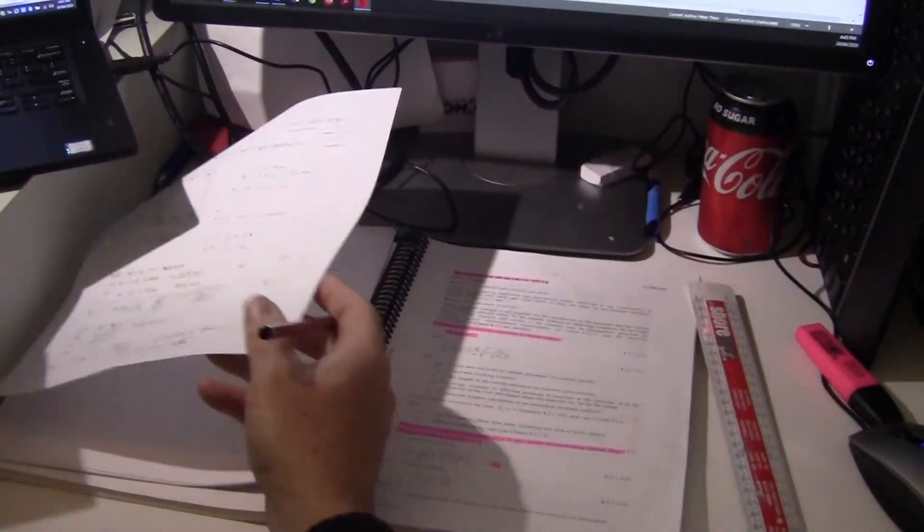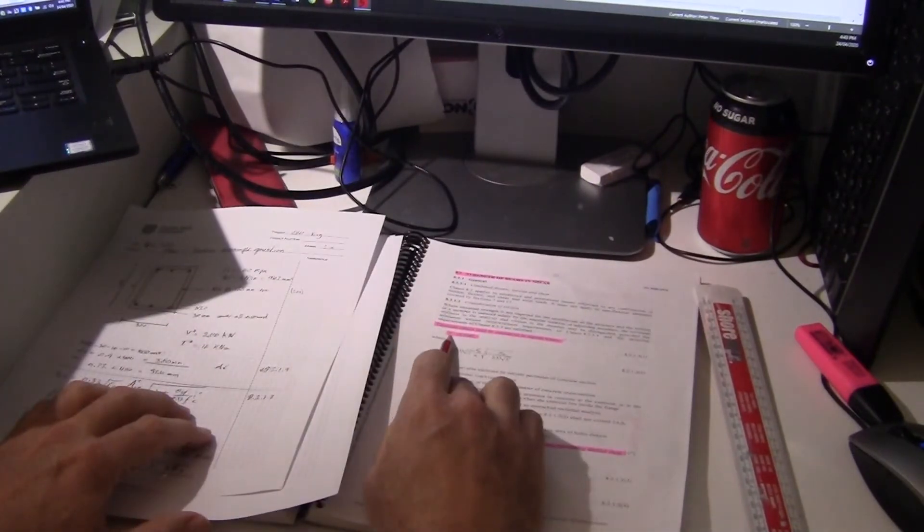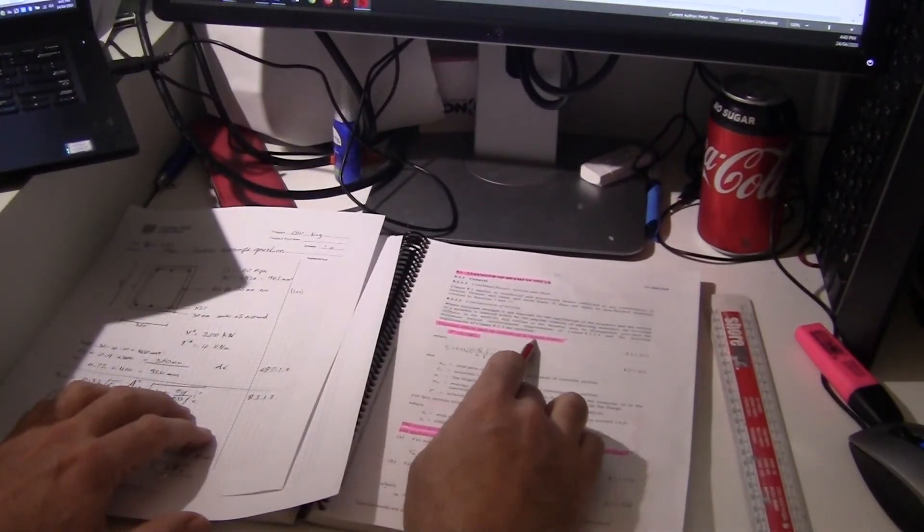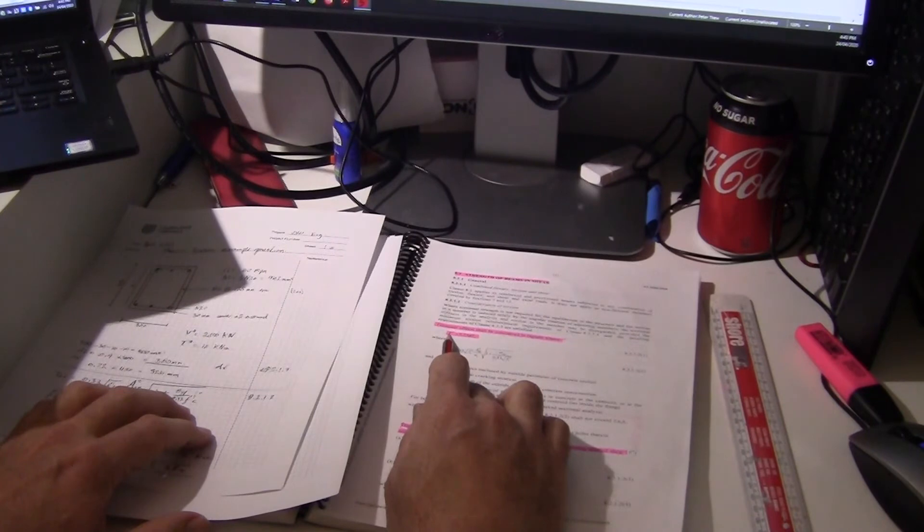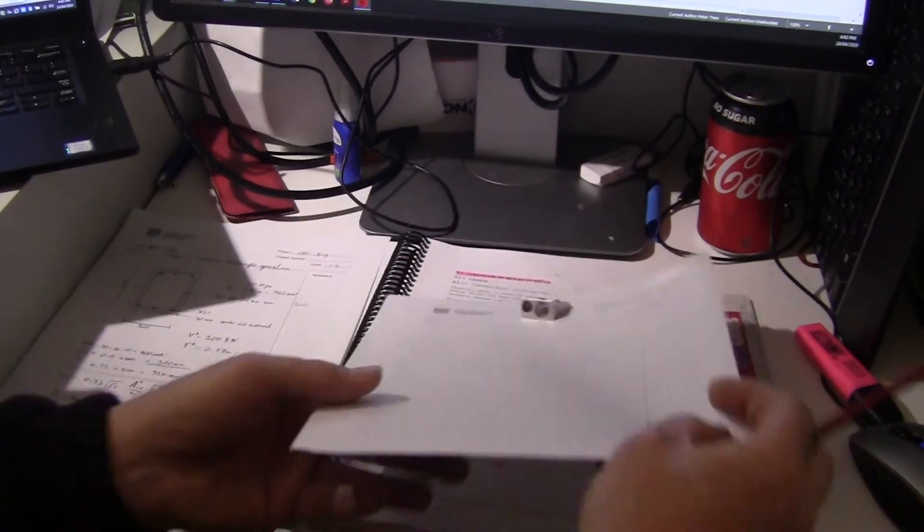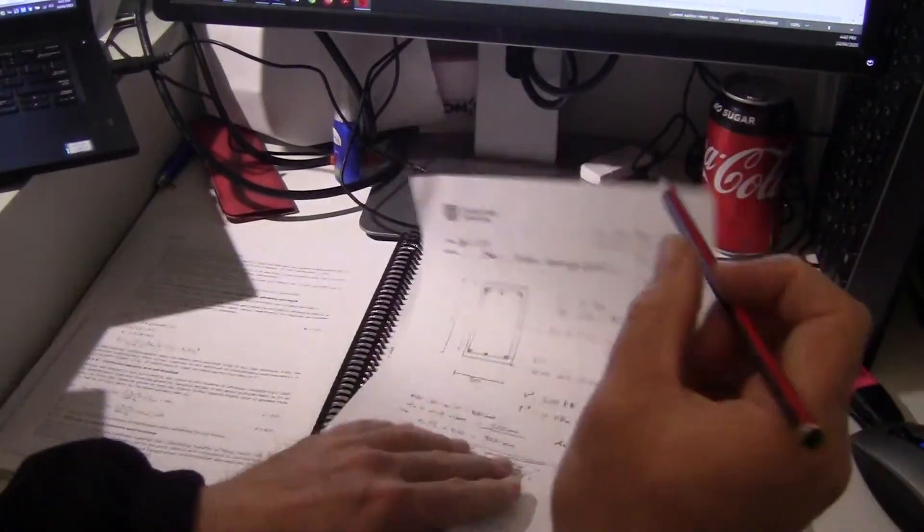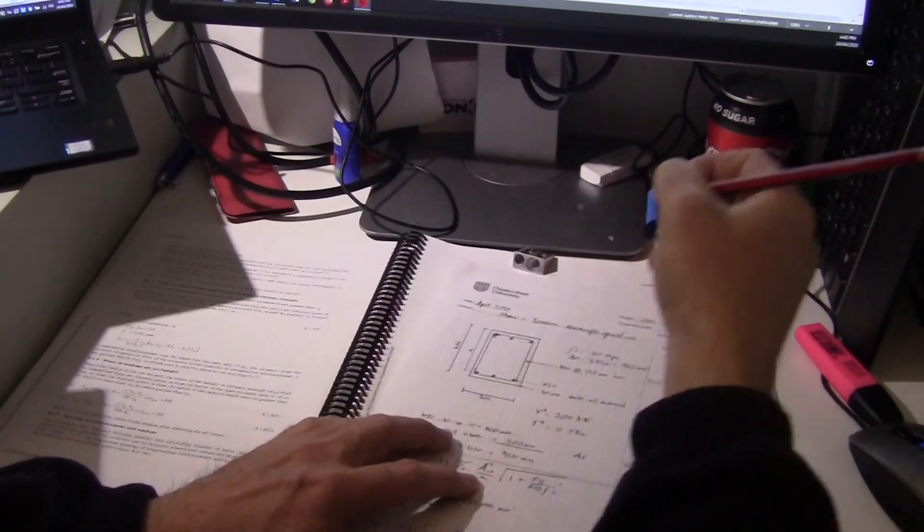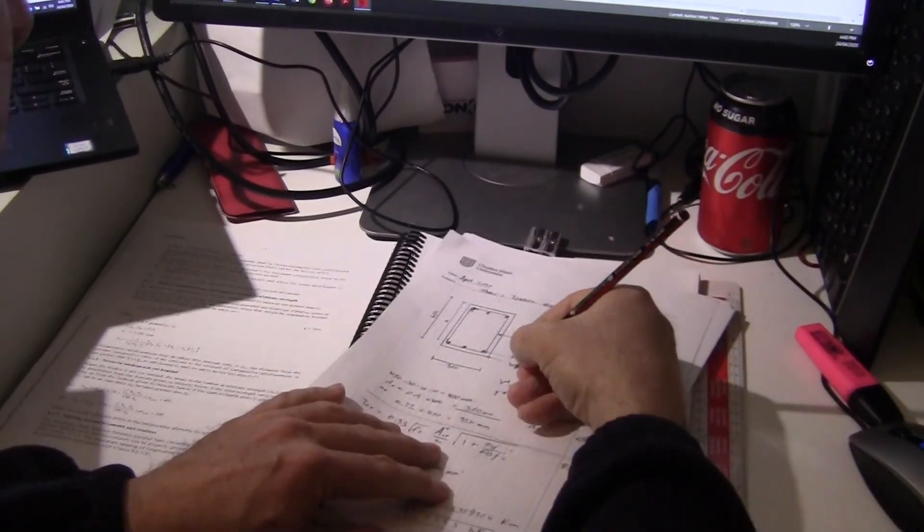Now the next question we have to find out is torsional effect shall be considered in regions where t star, which is the torsional load, is greater than 0.25 times phi times the cracking stress. All right let's come back to here for a minute.